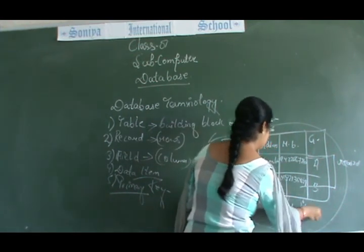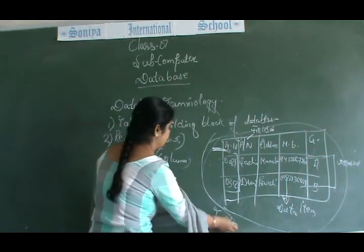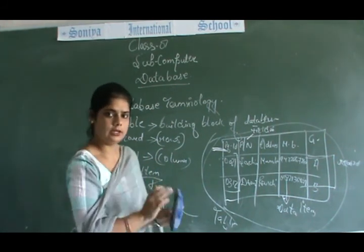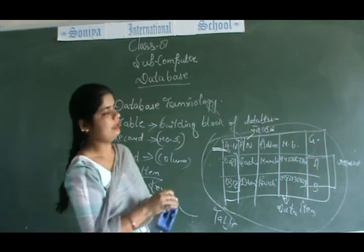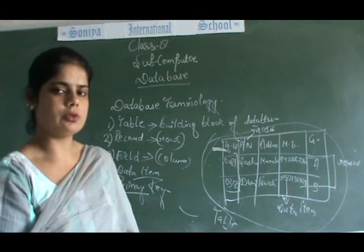Overall these are tables. This complete is a table. See, table is a collection of rows and columns. Clear? This was clear? Thank you everyone for watching this video. We will meet soon after.